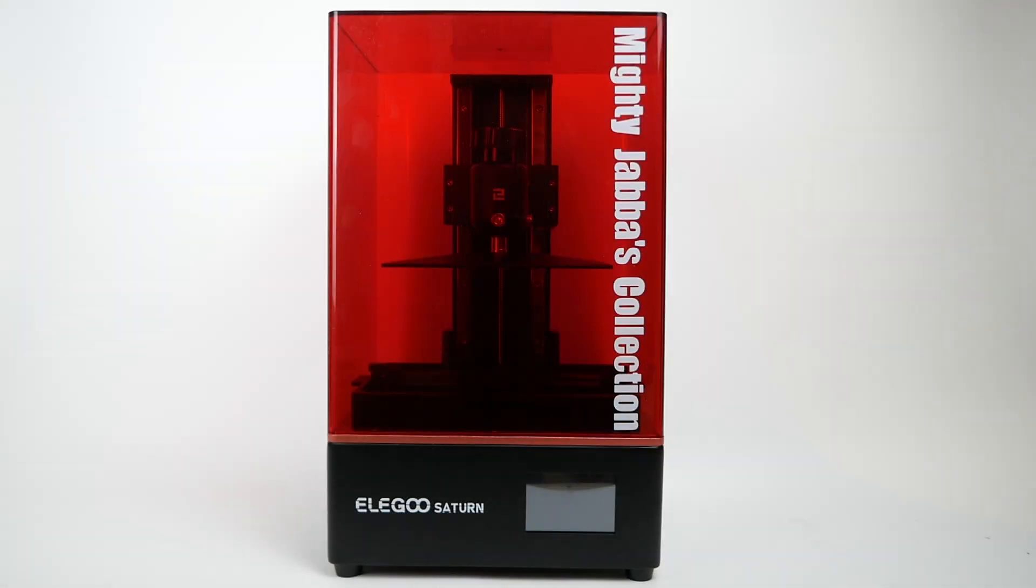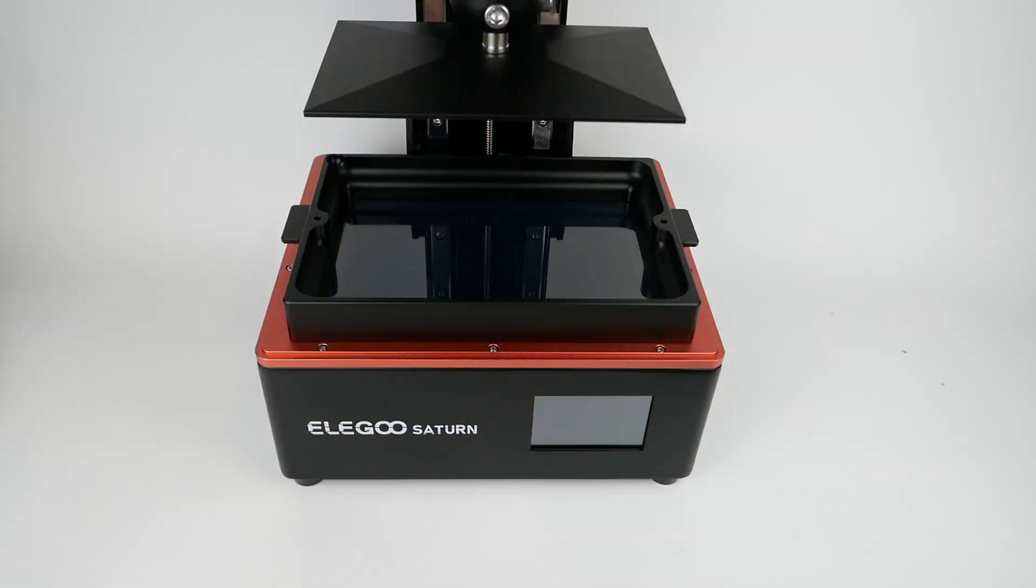But I think the main draw for this printer is that it can print pretty large models. So I wanted to show you the difference in size between the Saturn and the Mars, or the Mars 2 Pro, which are the other Elegoo printers that I have, but it also would apply to something like the Longer Orange 30, kind of the more entry-level printers.